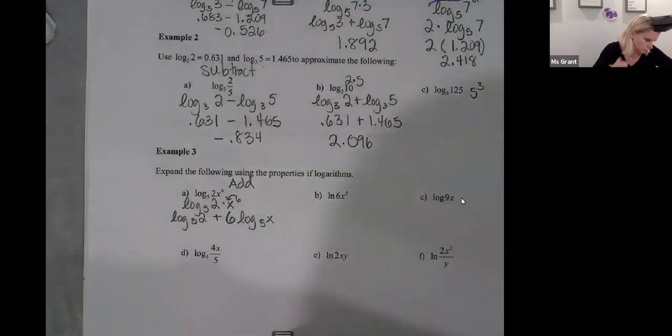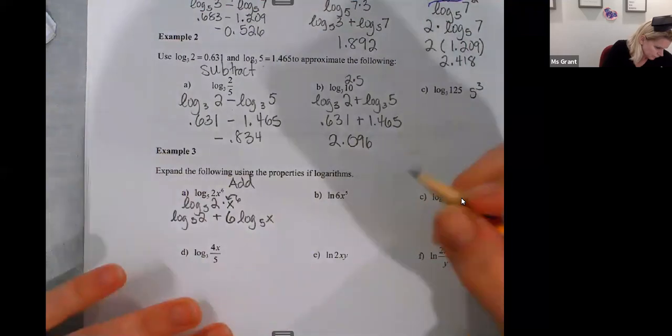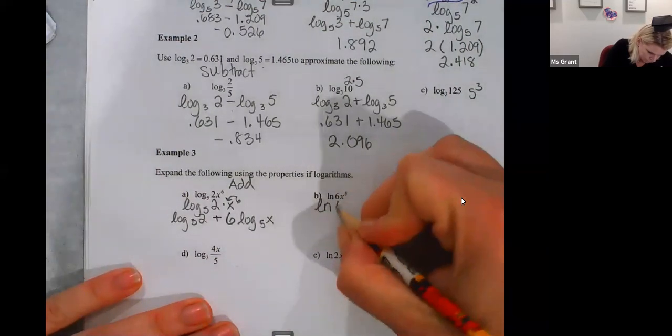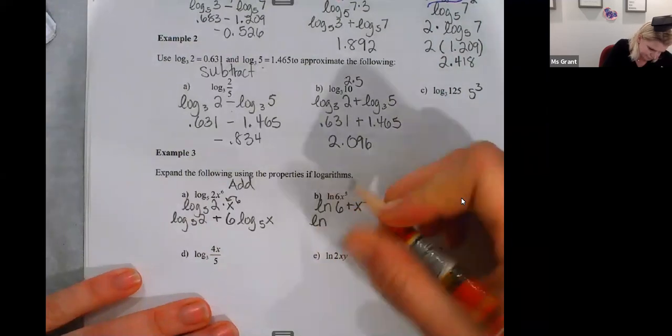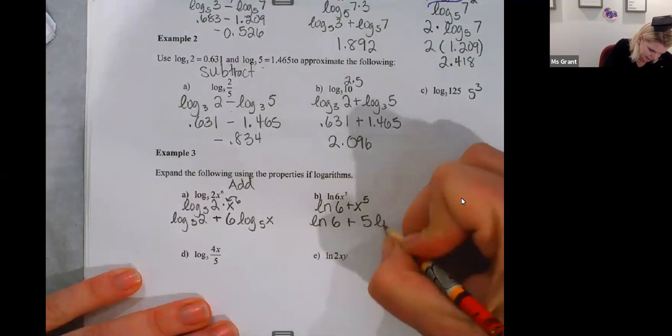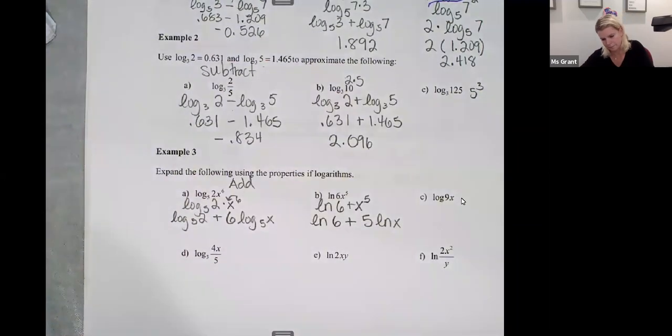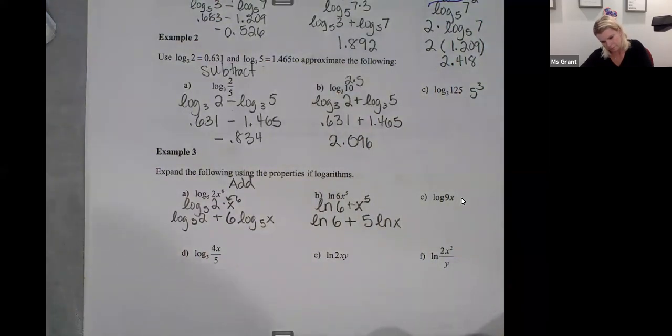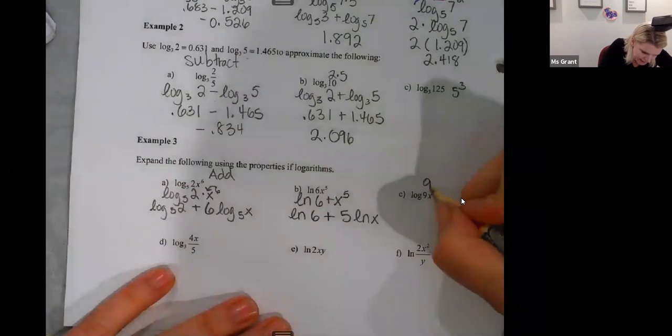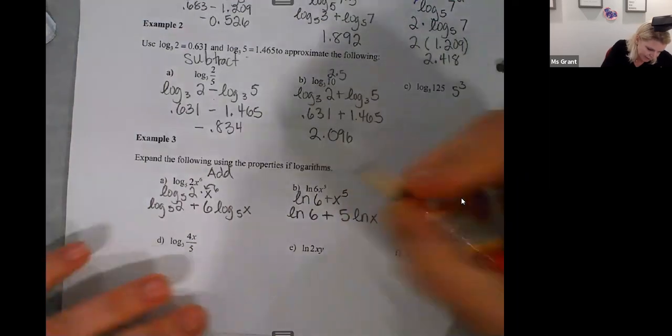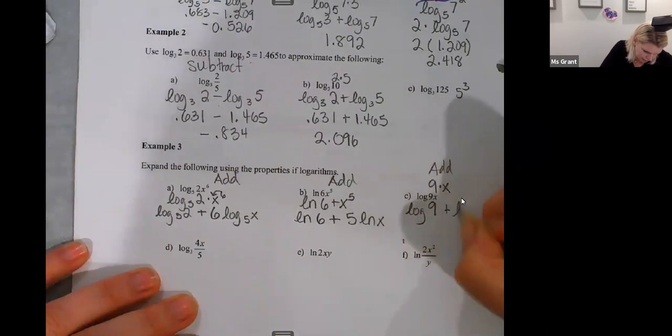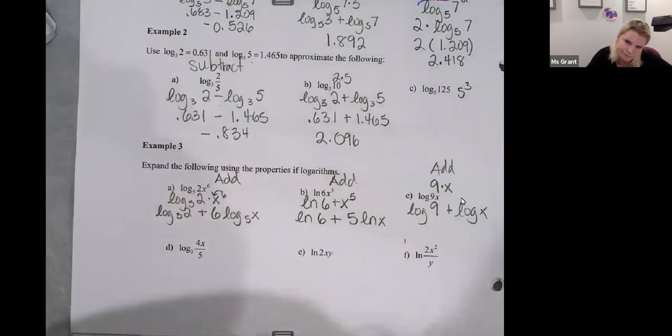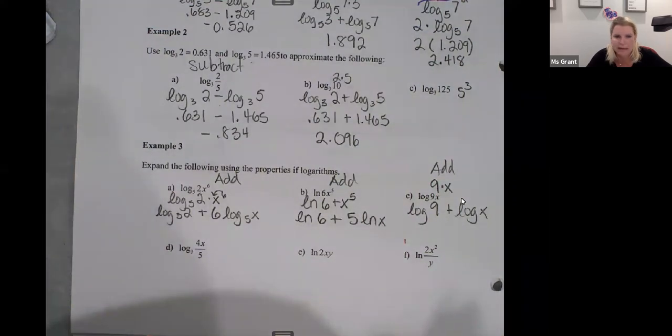B, natural log of six plus x to the fifth. Here we go. Ln of six plus five Ln of x. C, 9x is nine times x. So I'm still adding on all these: log of nine plus log of x. Easy, right? I'm expanding, I'm expanding, rewriting.